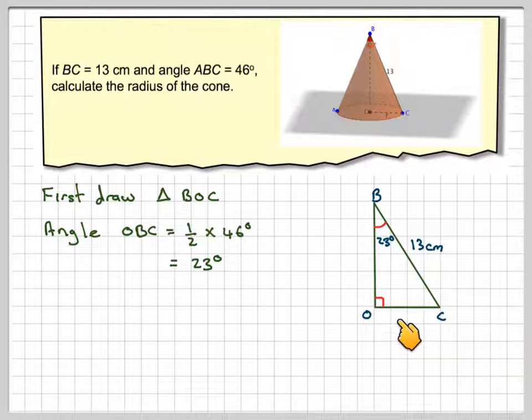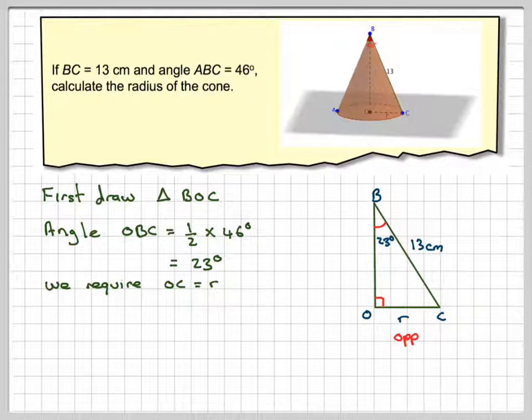And we have to calculate this length, O, C, which is the radius. So we can just use a little bit of simple right-angled trigonometry. So we're labeling the sides as opposite, hypotenuse, and adjacent.